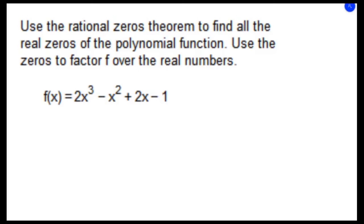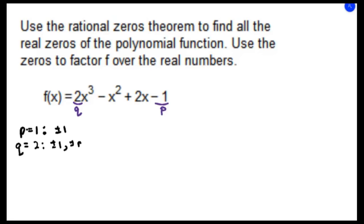With the rational zeros theorem, if our polynomial function is going to have a rational zero, it has to come from a very limited list based on our leading coefficient, which we call q, and our constant term, which we call p. The factors of p = 1 are plus and minus 1. The factors of q = 2 are plus and minus 1 and also plus and minus 2.